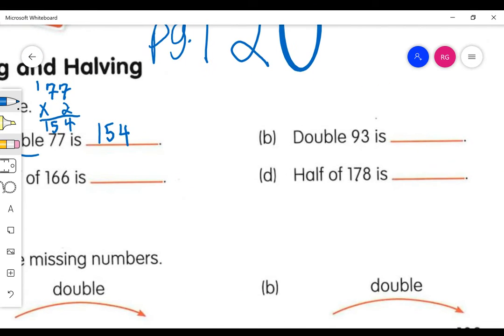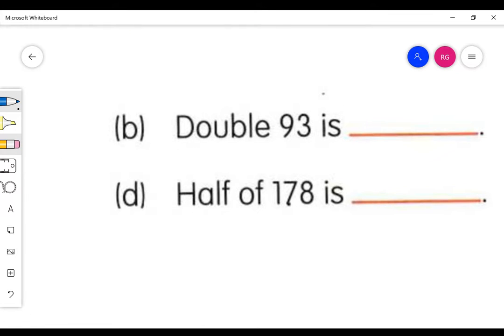And then for B, it says to double 93, so again, that's 93 times 2, and we know that equals 186 if we were to work that out.